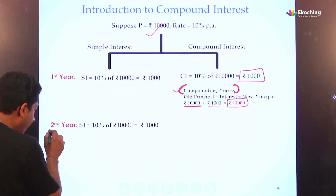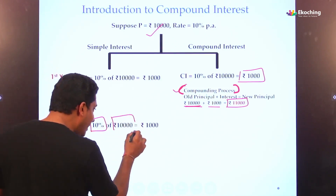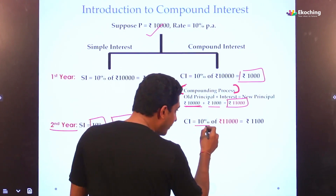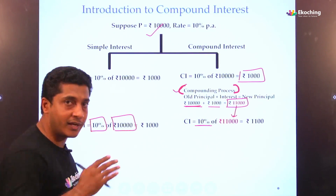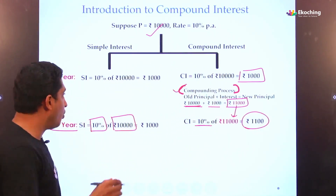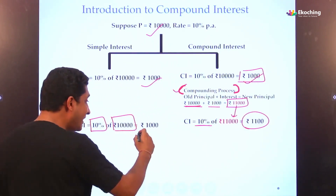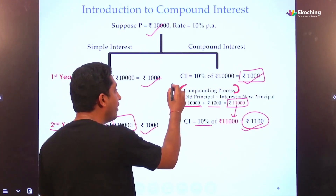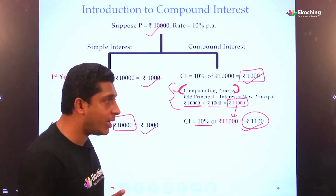Now in the second year, instead of finding 10% of 10,000, we find 10% of 11,000. So the principle in the second year is 11,000 — why? Because of this compounding process. Compounding process is adding the principle and interest together.